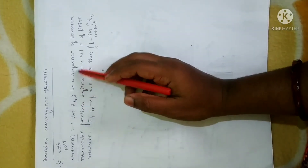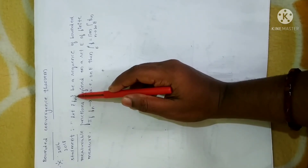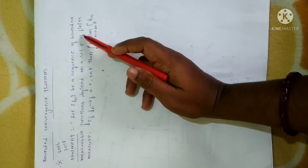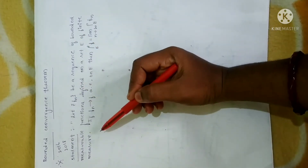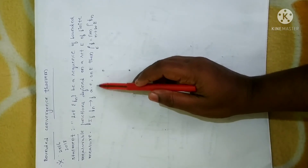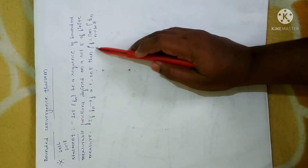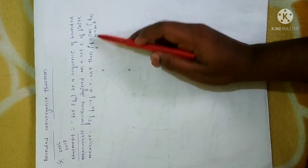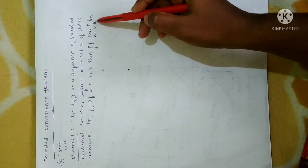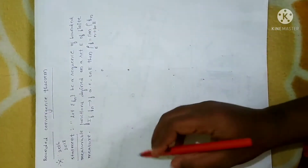Here is the statement: Let Fn be a sequence of bounded measurable functions defined on a set E of finite measure. If Fn is converging to F almost everywhere on E, then we have to prove that the integral over E of F is equal to the limit as n tends to infinity of the integral over E of Fn.